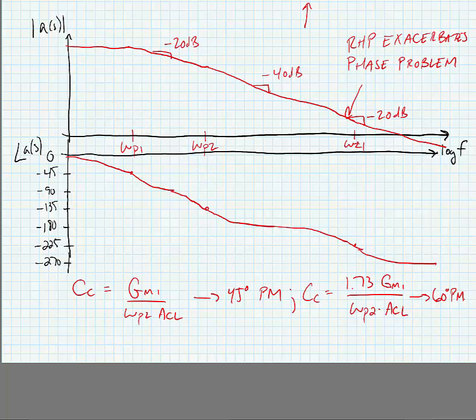45 degrees phase margin gives us the fastest settling assuming that we allow some ringing and 60 degrees gives us the fastest settling assuming that we can't have any ringing.